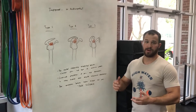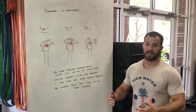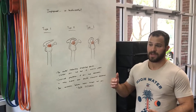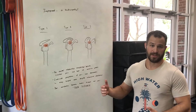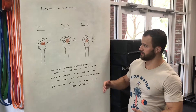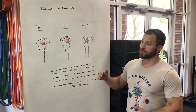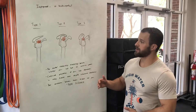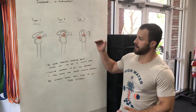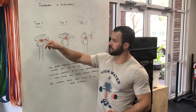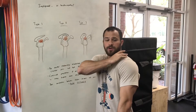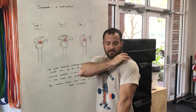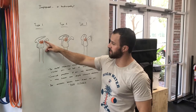Today we're going to talk about the concept of shoulder impingement and why it's probably a flawed idea, and what it more likely is. Shoulder impingement is the idea that there is something in your shoulder bumping up against something else and creating an issue with one of the tissues — basically degenerating the tissues.